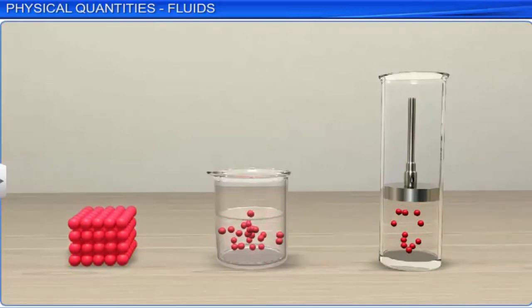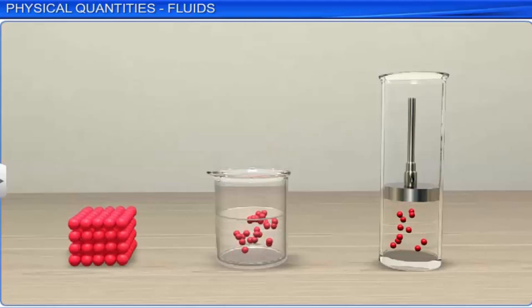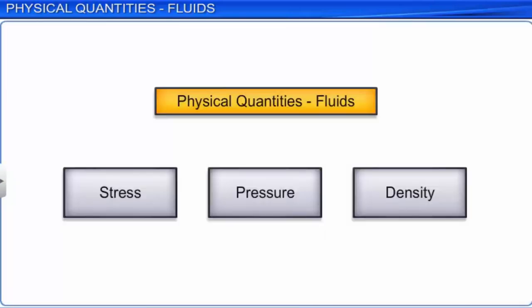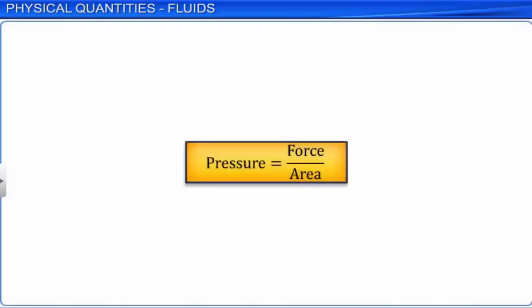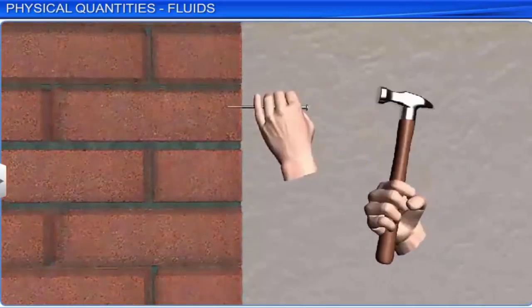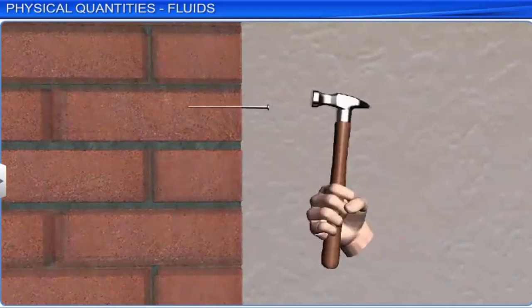Another common physical quantity related to fluids is pressure. Pressure is defined as force exerted per unit area. We experience many incidents involving pressure in our day-to-day life. One such example is that it is easier to drive a sharp nail into a wall than a blunt one. For a sharp nail, the area on which force acts is less, hence more pressure.